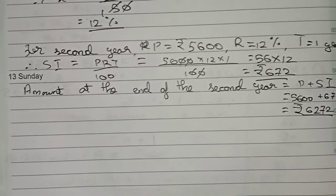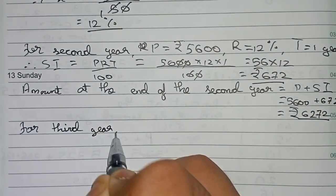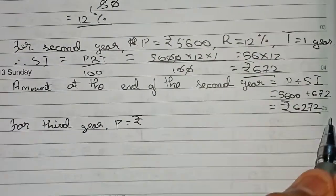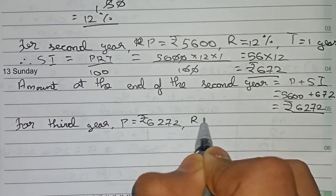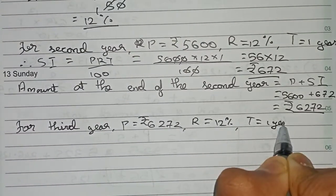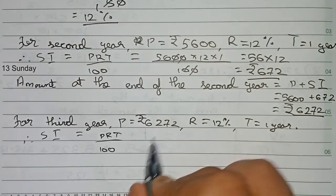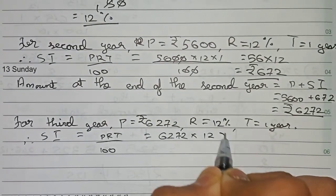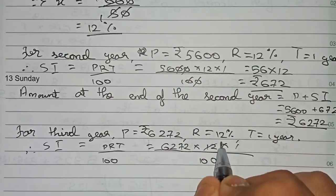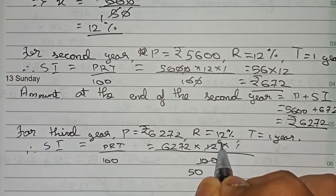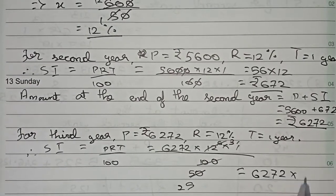For the third year: the principal is the amount at the end of the second year, which is rupees 6272. Rate is the same 12% and time is 1 year. So SI equals PRT by 100 = 6272 into 12 into 1 by 100. First we simplify 12 and 100: dividing both by 4 gives 3 by 25.